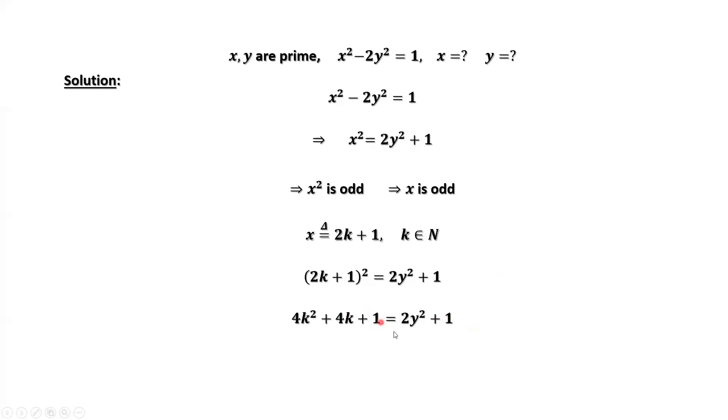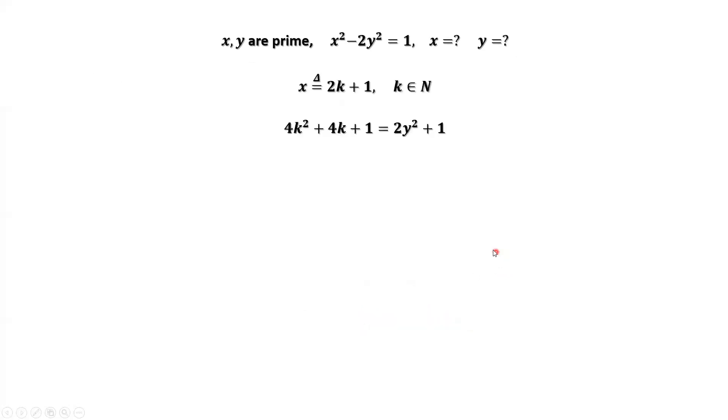Positive 1, positive 1, we can cancel. This implies 2y squared equals 4 times (k squared plus k). Here we can factor 4 out. Both sides divided by 2, we have y squared equals 2 times (k squared plus k).